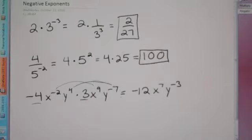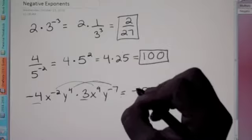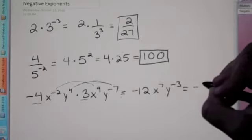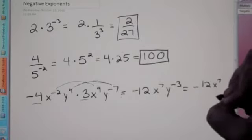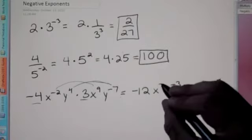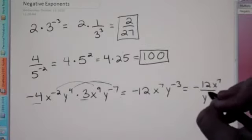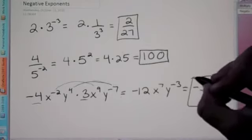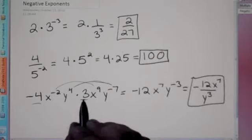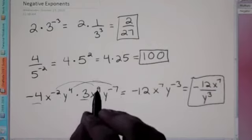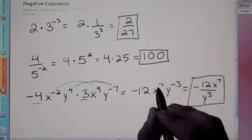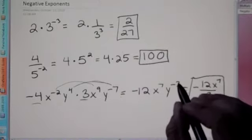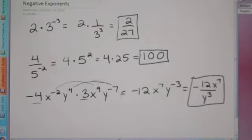For our final answer, we don't want any negative exponents. It's okay to have a negative in front of a coefficient, but not as an exponent. So we rewrite this as negative 12x to the 7th — the exponent is positive, so that's fine. Then we flip y to the 3rd to the bottom to make it a positive exponent. So the final answer is negative 12x⁷ / y³.